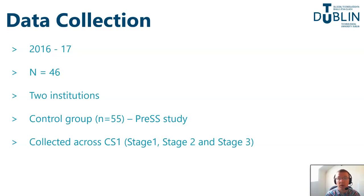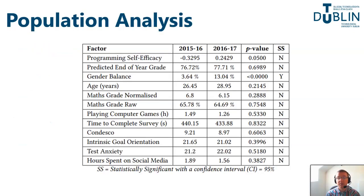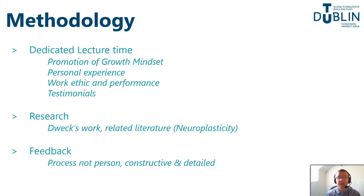This paper focuses on the differences between stage one and stage two and performance in the introductory programming course. Before we began, we used stage one data to conduct a population analysis comparing both the control and intervention groups. The only statistically significant difference found was gender balance. The methodology was drawn from the literature where at each of the remaining 12 weeks of the CS1 course, we dedicated 10 to 15 minutes of lecture time to promoting a growth mindset, applying personal experience, work ethic, performance, and testimonials.